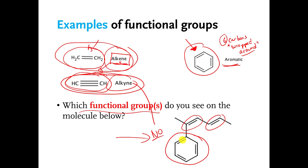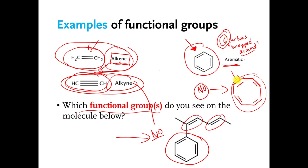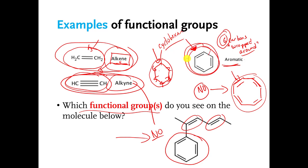Does that molecule have an aromatic functional group? The answer is no. It does have alternating single and double bonds, and the carbons wrap around in a circle, but it does not have six — this one has eight carbons. What about this molecule — does it have an aromatic functional group? The answer is also no, because it does not have alternating single and double bonds. It does have six carbons wrapped around in a circle, but that means this one is called cyclohexane.